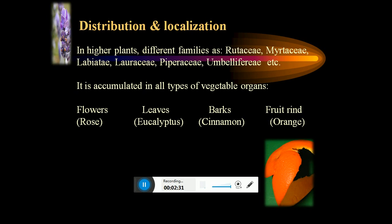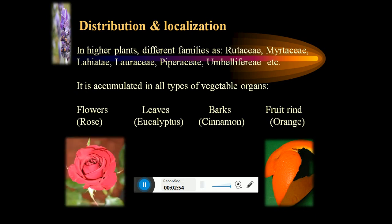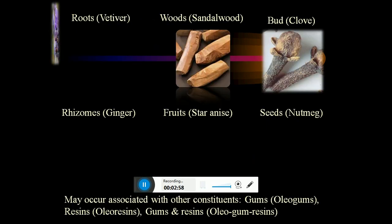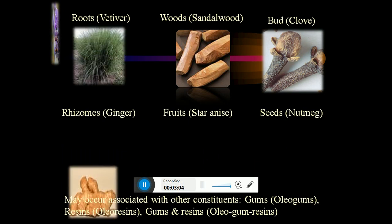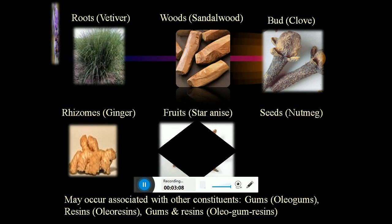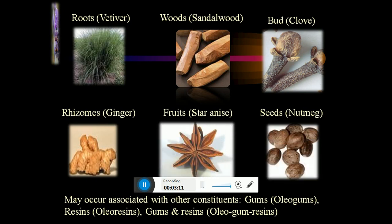Coming to the distribution and localization: in higher plant families like Pinaceae, Lamiaceae, Lauraceae and Umbelliferae family, essential oils are widespread. They accumulate in all types of vegetative organs like flowers, leaves, buds — in the case of cinnamon — fruit in the case of orange. Also includes parts like sandalwood, clove buds, ginger rhizome, fruits, and seeds. They may occur associated with other constituents like oleogum resins, gums and oleoresins.